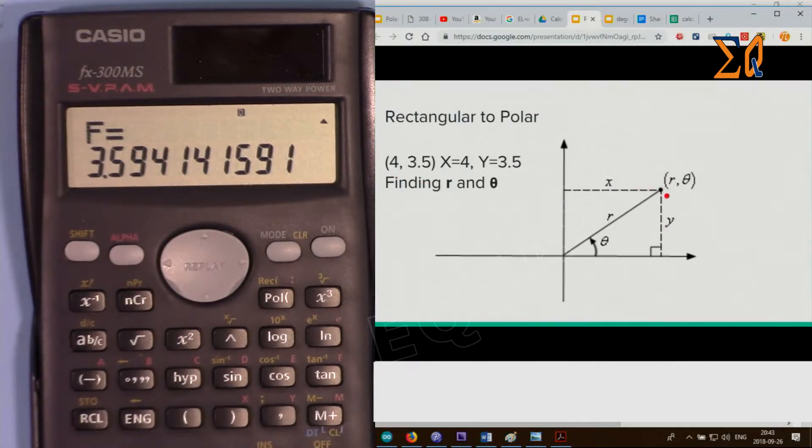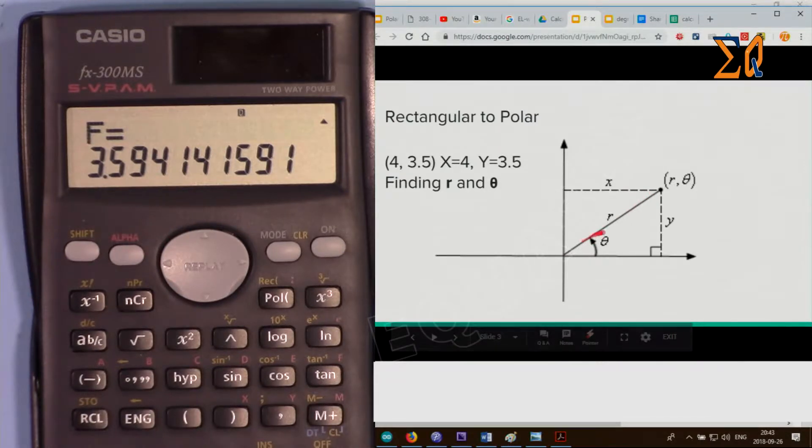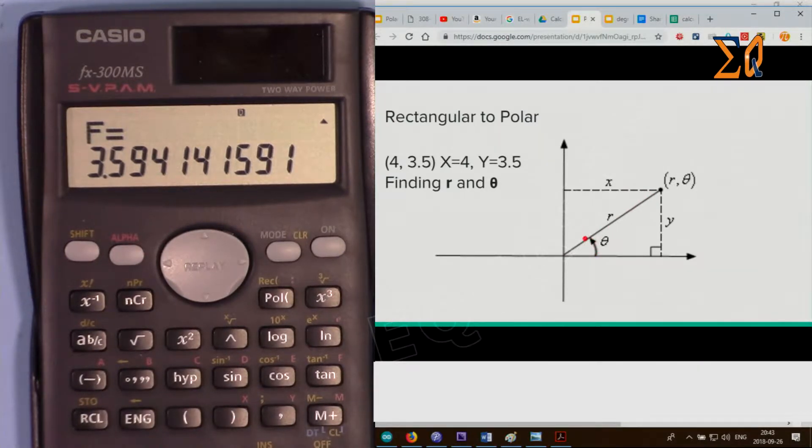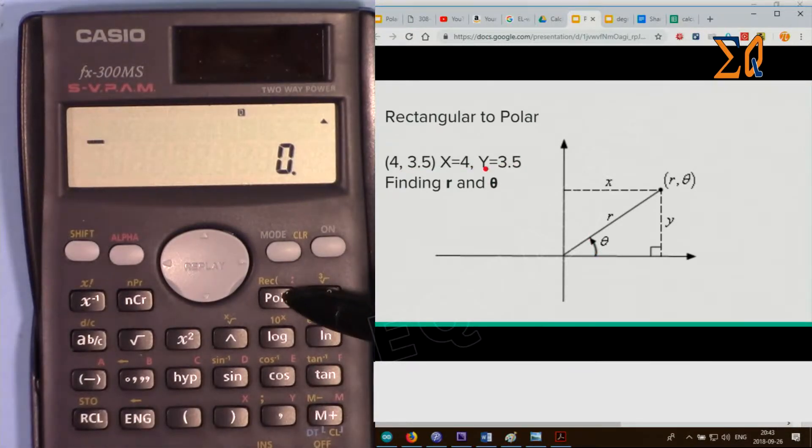You have X at this point and Y, and you want to find the magnitude of this vector and the angle. So X is 4, Y is 3.5. Now this time I want polar, so I'm pressing pol and entering the rectangular values.